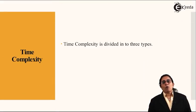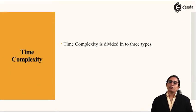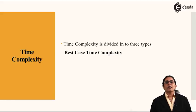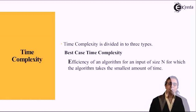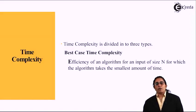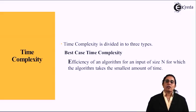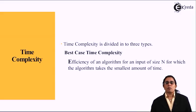Now time complexity is also divided into three types. The first one is the best case time complexity. What is best case time complexity? Efficiency of an algorithm for an input of size n for which the algorithm takes the smallest amount of time.